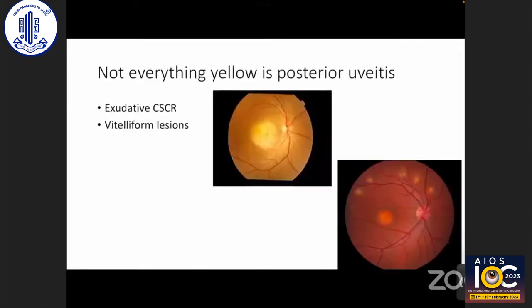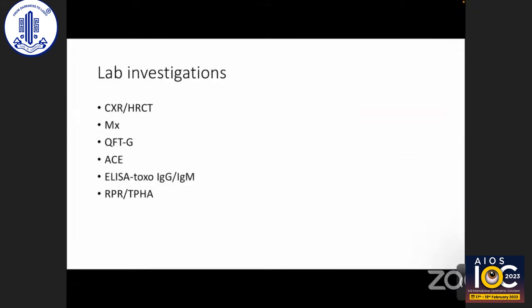Not everything that is yellow on fundus examination represents posterior uveitis. Exudative CSCR may have fibrin beneath the retina that mimics a choroidal lesion — FFA and OCT can help clarify the pathology. Vitelliform lesions may also look like multifocal choroiditis, and autofluorescence and FFA can differentiate choroiditis from these conditions.